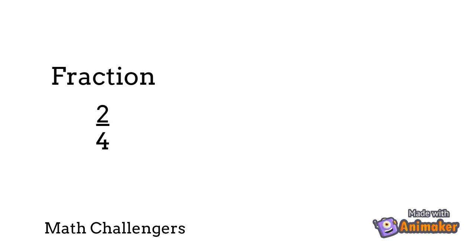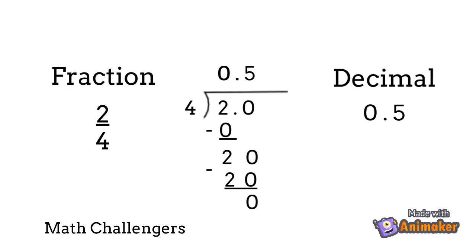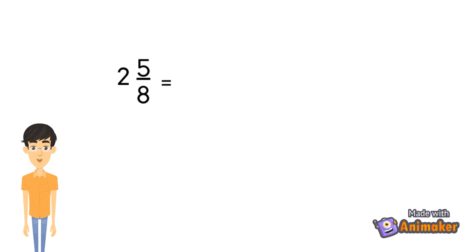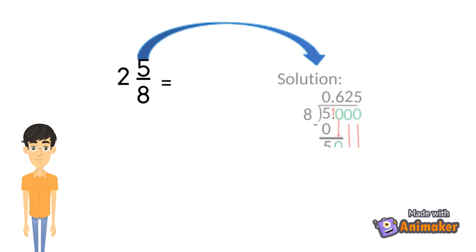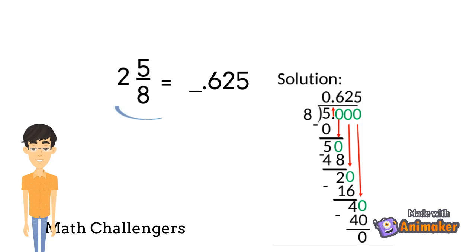Now try to change 2 fourths as a decimal. 2 fourths is 0.5 in decimal. In the case of a mixed number, just divide the numerator by the denominator, and the whole number is written on the left side of the decimal point. So 2 and 5 eighths is 2.625.